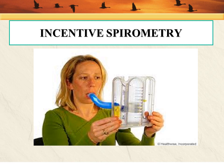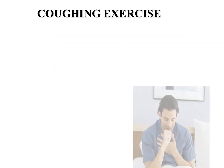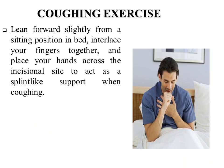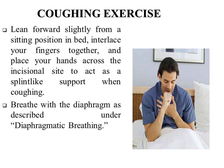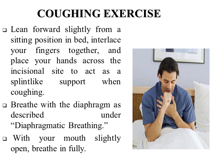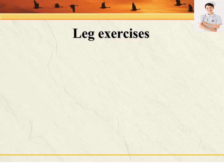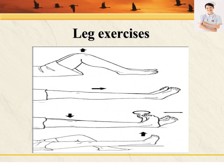We have to teach the patient how to perform incentive spirometry. The coughing exercise includes leaning forward slightly from a sitting position in bed, interlacing fingers together and placing hands across the incisional site to act as a splint-like support when coughing. Breathe with the diaphragm as described under diaphragmatic breathing, then with your mouth slightly open, breathe and cough gently.